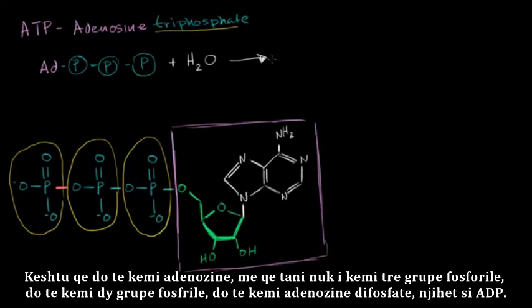And so you're going to have then adenosine. Since you don't have three phosphoryl groups anymore, you're only going to have two phosphoryl groups. You're going to have adenosine diphosphate, often known as ADP. This is ATP. This is ATP right over here.